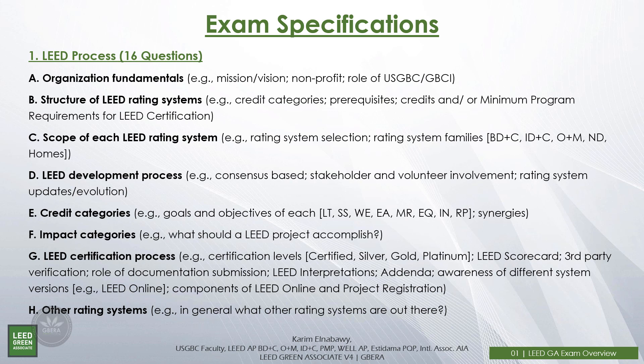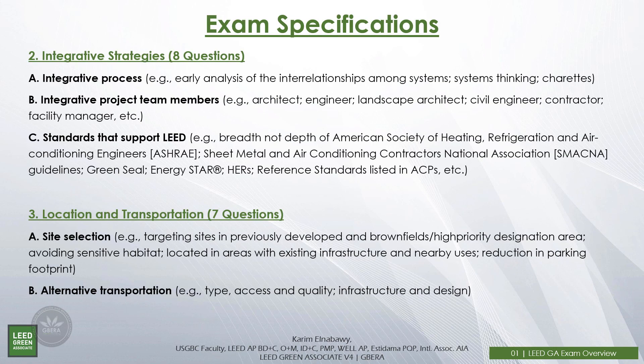Exam specifications — this part is really important for understanding how to prepare for the exam. For each category there are a certain number of questions. LEED process has 16 questions out of 85 scored questions and covers: organization fundamentals, structure of the LEED rating system, scope of each LEED rating system, LEED development process, credit categories, impact categories, LEED certification process, and other rating systems. Integrative strategies has 8 questions covering: integrative process, integrative project team members, and standards that support LEED.